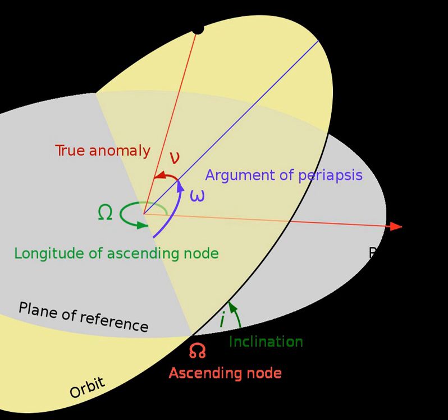An argument of periapsis of 0 degrees means that the orbiting body will be at its closest approach to the central body at the same moment that it crosses the plane of reference from south to north.